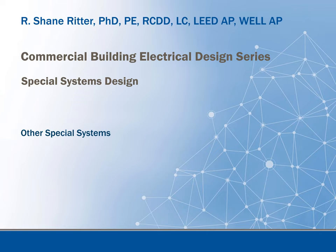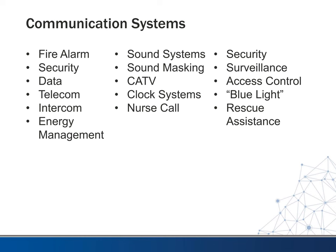This video is part of the commercial building electrical design series. We're going through these special systems that might be used or you might see in a typical commercial building. Up to this point we've talked about telephone or telephony systems, local area networks and data systems within a building, but there are several other special systems that you might see depending on what type of building you're dealing with. In this lecture we just want to briefly touch on all those different systems and some of the nuances of those.